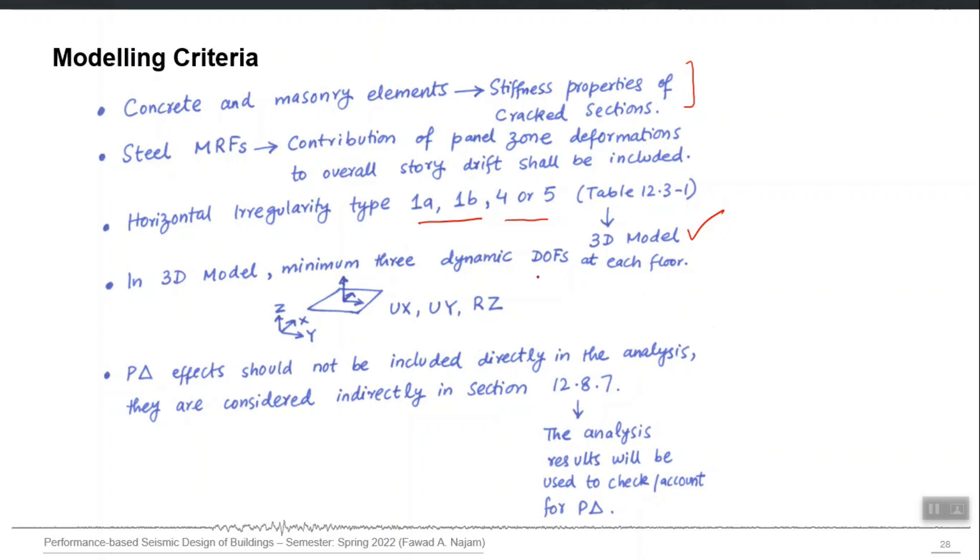In three-dimensional model, you should have at least three dynamic degrees of freedom at each floor. The mass of that floor can be lumped at its center and that mass should have at least three degrees of freedom: two translations in two horizontal directions and one rotation about the vertical axis. This is the case when you are not performing the time history analysis in vertical direction. If you are performing a time history analysis in vertical direction also, then you must have the dynamic degrees of freedom in the UZ direction also, vertical direction also.